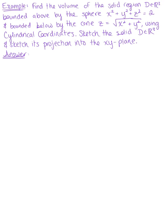Find the volume of the solid region bounded above by the sphere x² + y² + z² = 2, and bounded below by the cone z = √(x² + y²), using cylindrical coordinates.